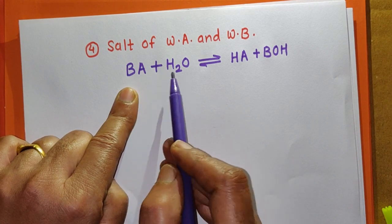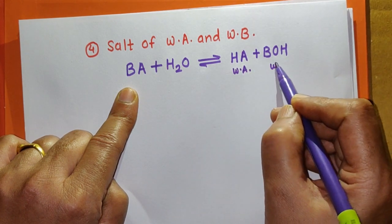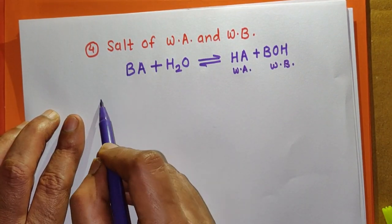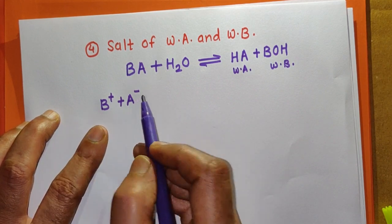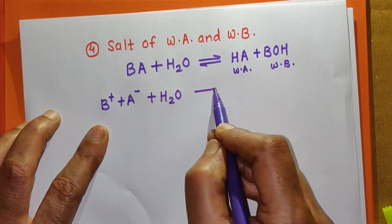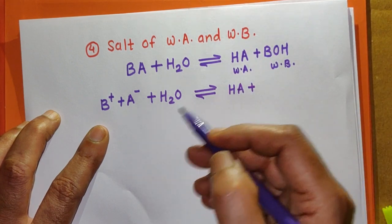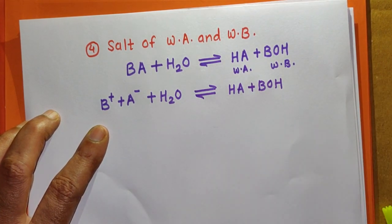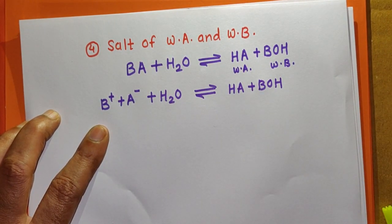The ionization reaction can be written as: B⁺ + A⁻ react with water to give HA, which is a weak acid remaining mostly in molecular form, and BOH, which is a weak base also remaining mostly in molecular form. This is the hydrolysis reaction for a salt of weak acid and weak base.